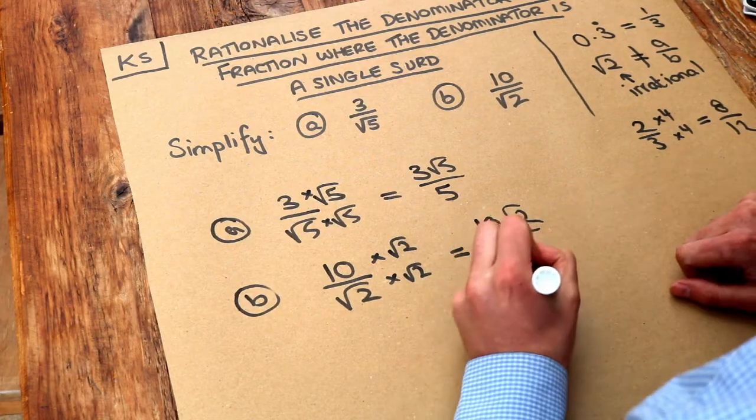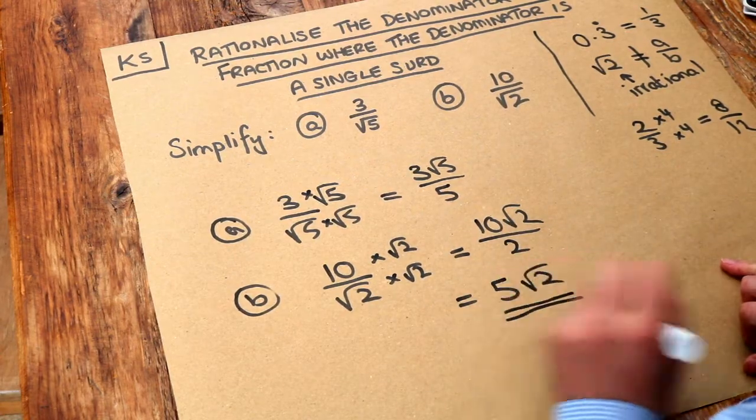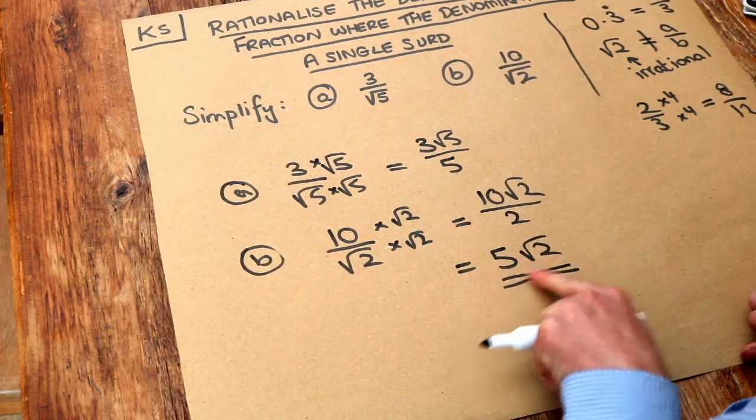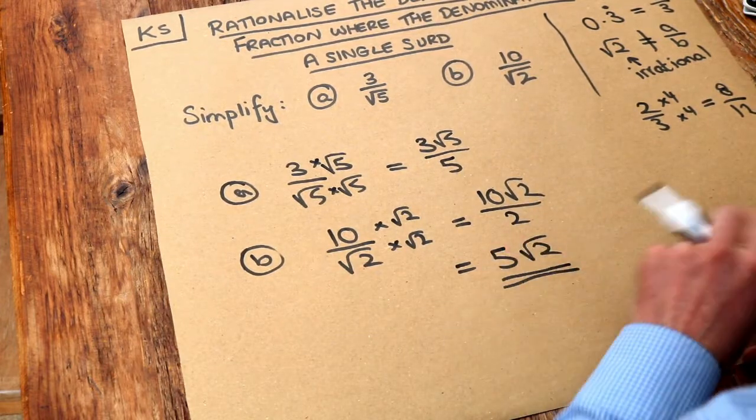We've got that root 2 at the top that just remains as root 2, and that is the final answer. So if you were to type that into a calculator, it would actually rationalize it for you and you would get that answer there.